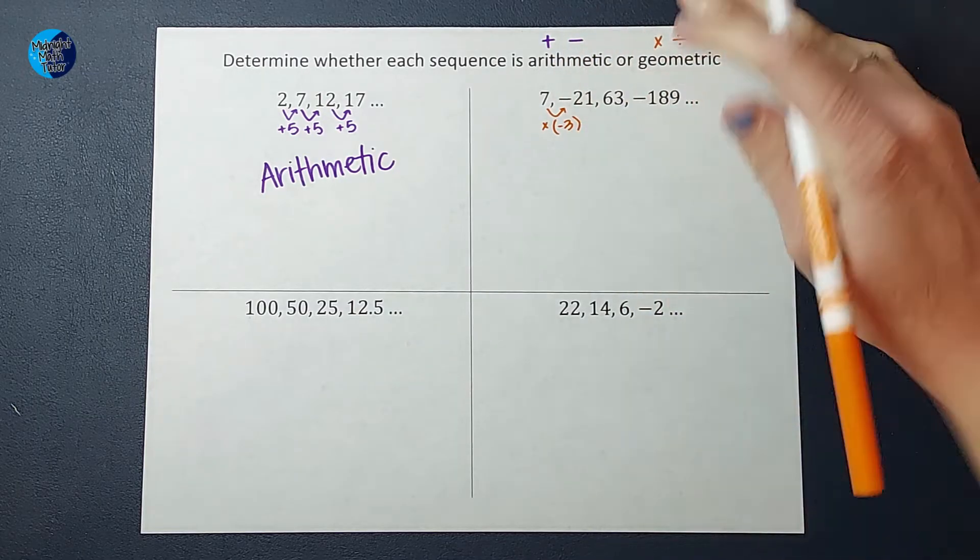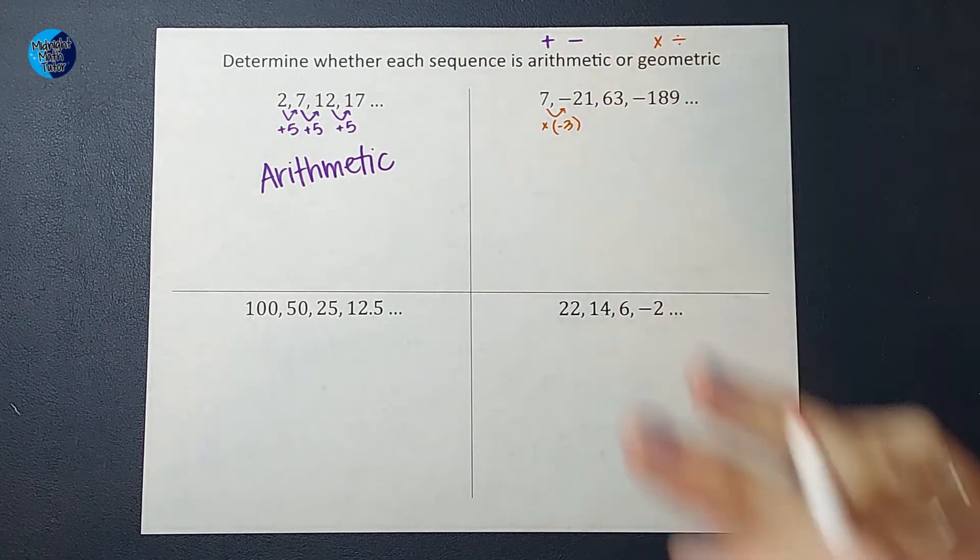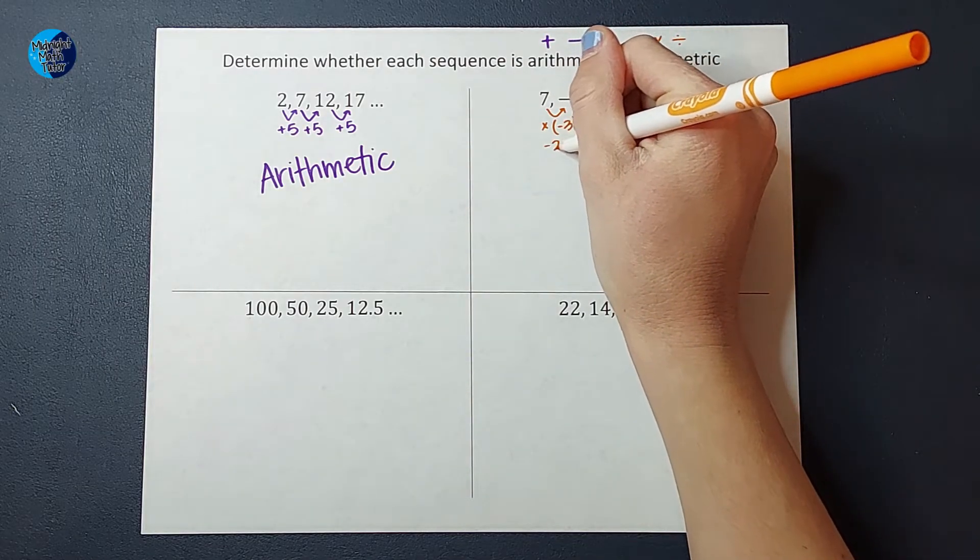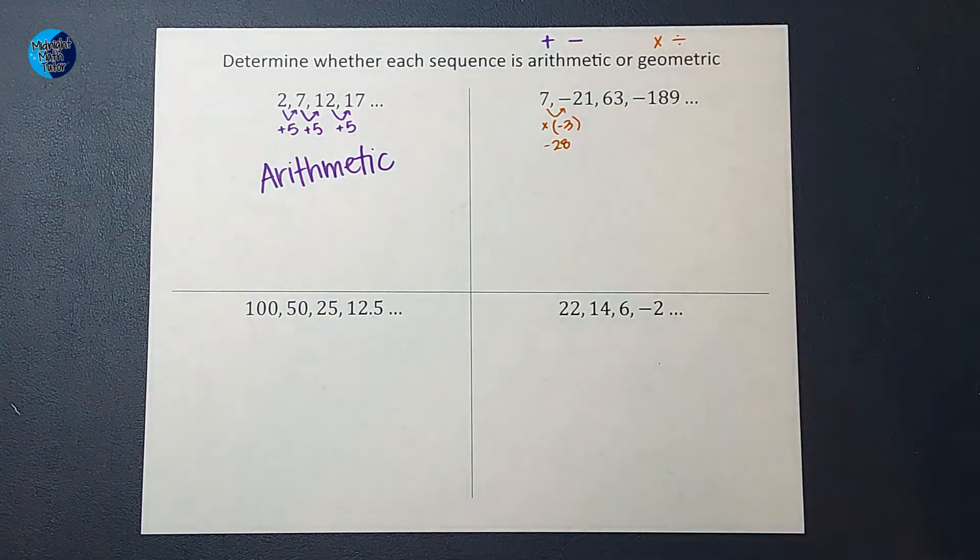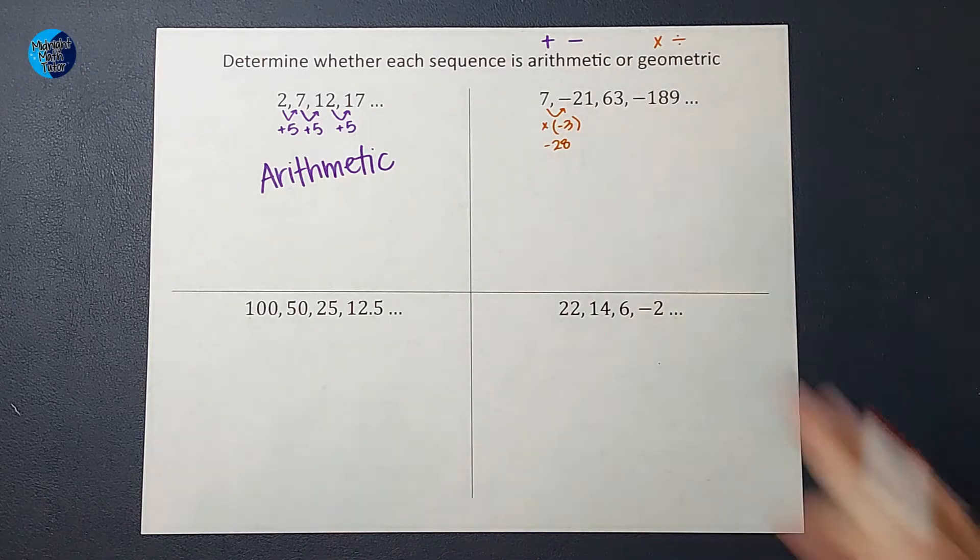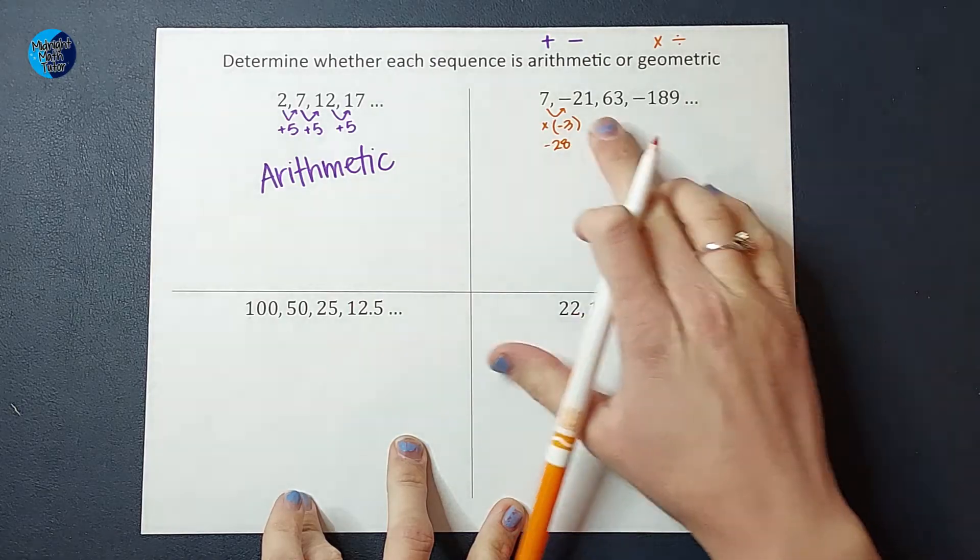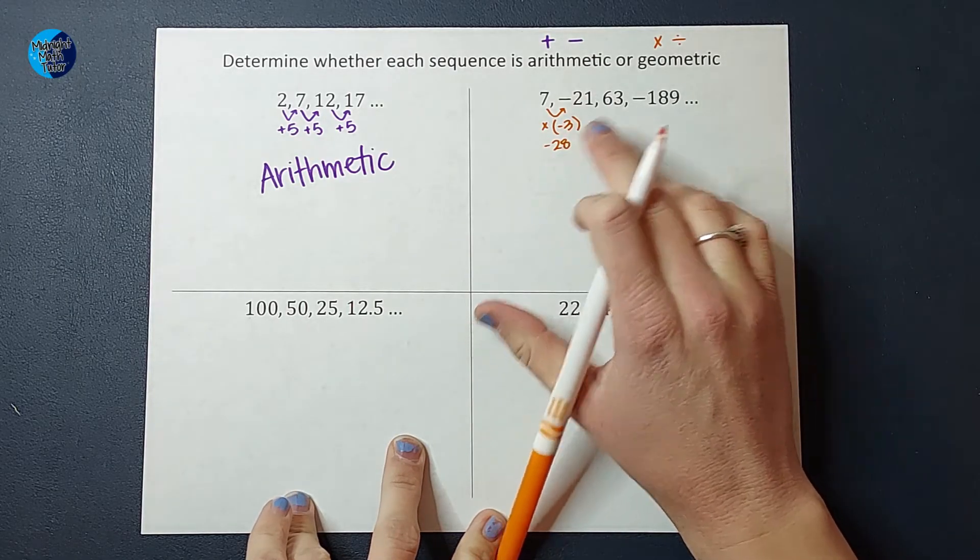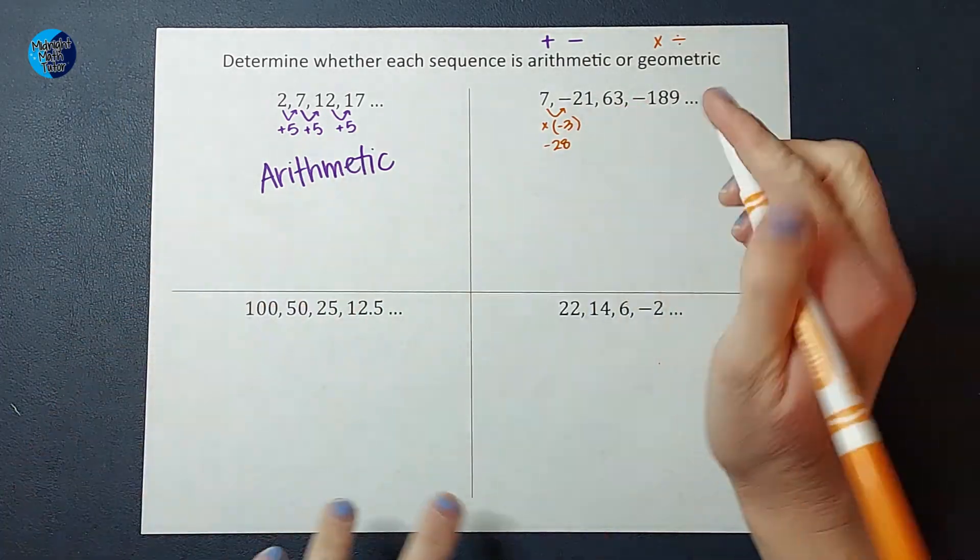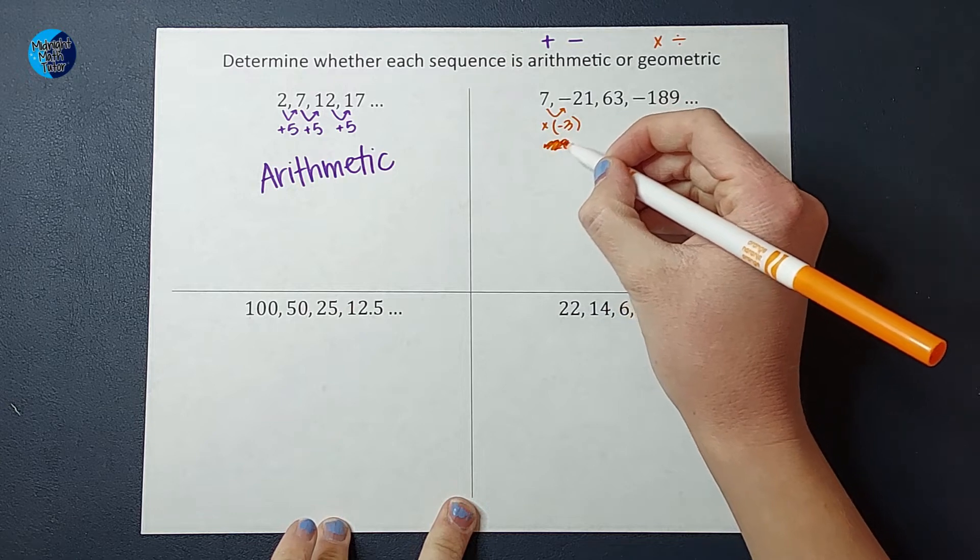But if you looked at that and you didn't look at the following numbers, you could also think, oh, we are subtracting 28, right? 7 minus 28 would give me negative 21. So how do we know which one it is? Well, we keep looking, right? Negative 21 minus 28 is definitely not 63. So I can rule that guy out.